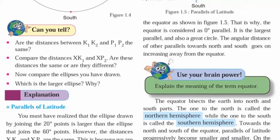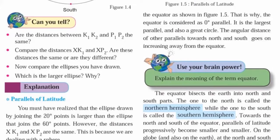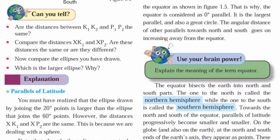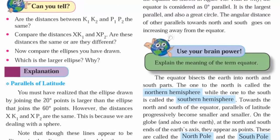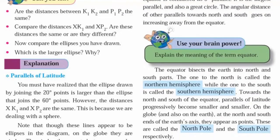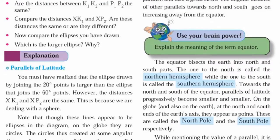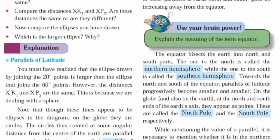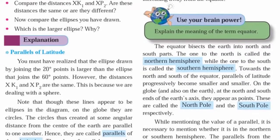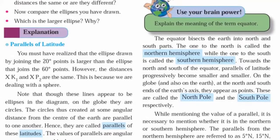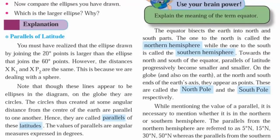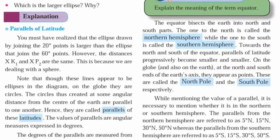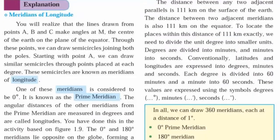The total number of parallels on the earth. At zero-degree there is the equator. One can draw 90 parallels in the northern hemisphere from 1 degree north to 90 degrees north. Similarly, one can draw 90 parallels in the southern hemisphere from 1 degree south to 90 degrees south.